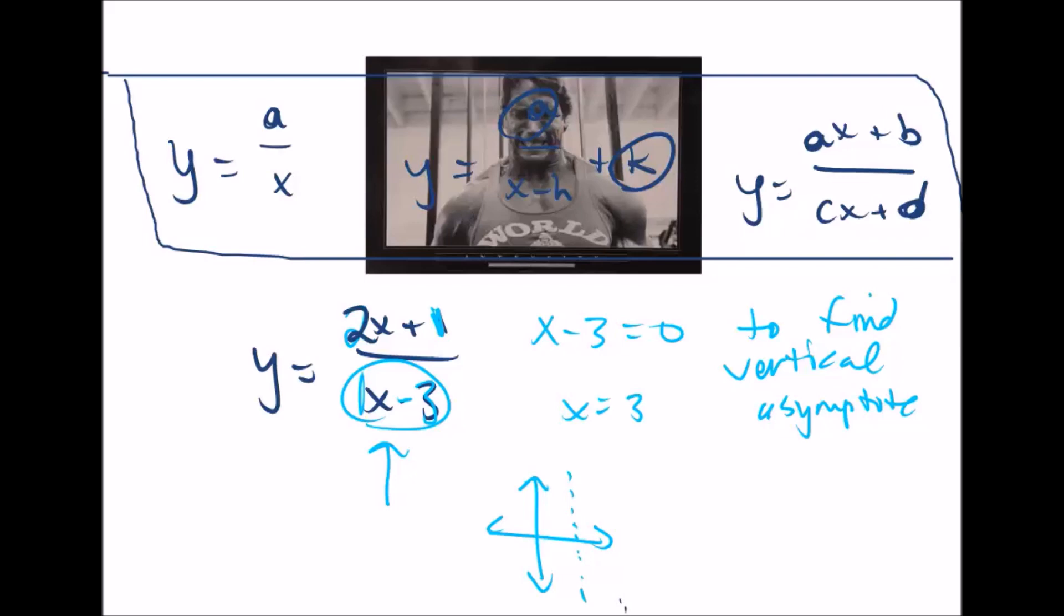That's why we have to draw this vertical asymptote, because we're saying to this equation, no, we refuse to put a 3 here, because if we do, we're violating this principle of math. So we're drawing this vertical asymptote to really lock that out from the equation.